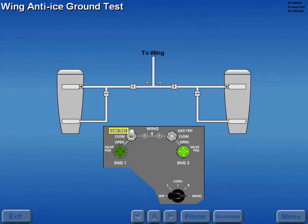Moving a wing anti-ice switch to the ground test position momentarily extinguishes the valve position light while the valves are in transit. When both valves fully open, the valve position light illuminates.